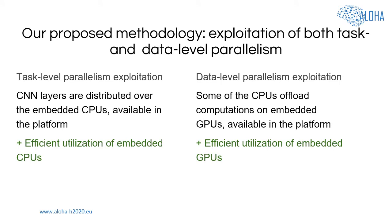In our methodology, we propose to utilize both task-level and data-level parallelism for efficient execution of CNNs on embedded platforms. In our approach, CNN layers are distributed over the embedded CPUs available in the platform, and some of the CPUs offload computations to embedded GPUs available in the platform. Thus, in our approach we take full advantage of computational resources available in the platform to ensure efficient and high-throughput CNN execution on embedded devices.